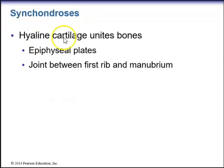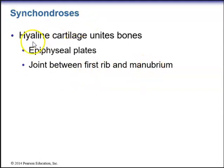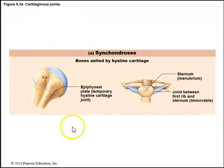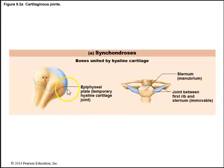For synchondroses, hyaline cartilage unites the bones — we can see this in the epiphyseal plates and in the joint between the first rib and the manubrium. The epiphyseal plate is a temporary hyaline cartilage joint found in long bones. The joint between the first rib and the sternum is another example of synchondroses, and it is immovable — functionally a synarthroses.